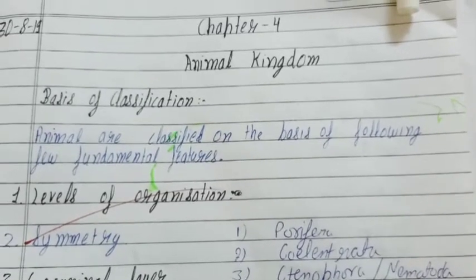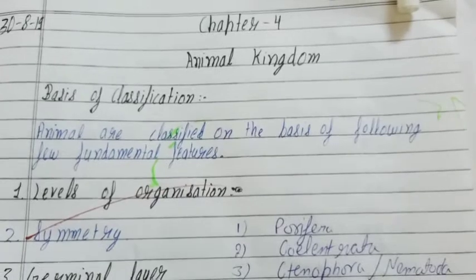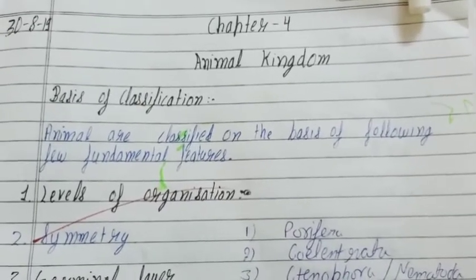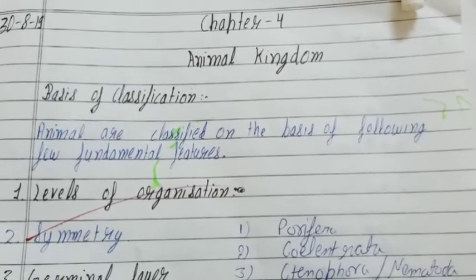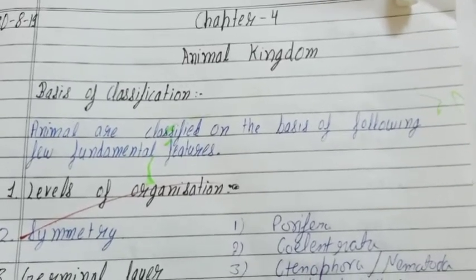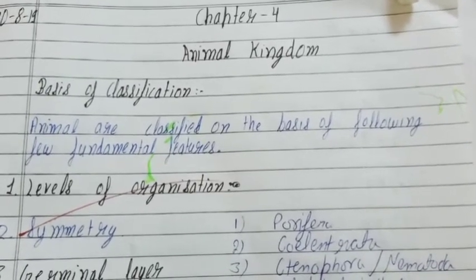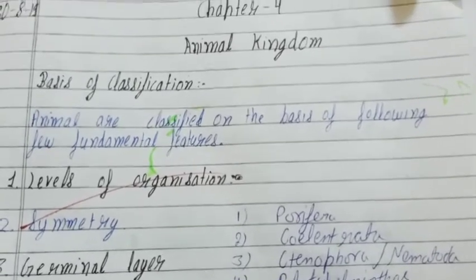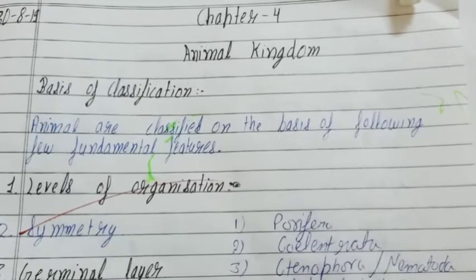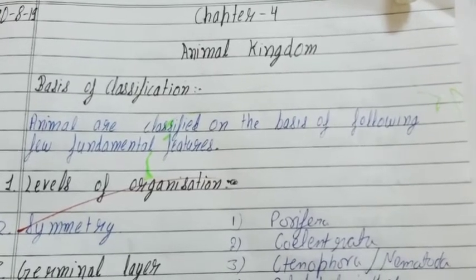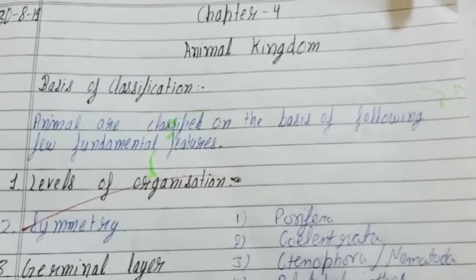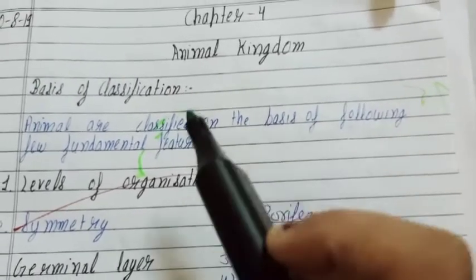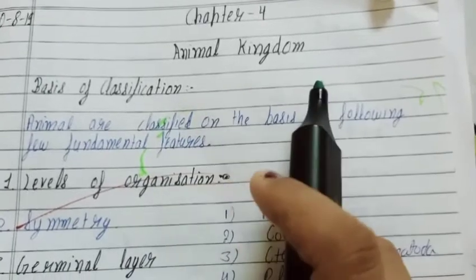Hello students, this is Chapter 4 of Biology: Animal Kingdom. Animal Kingdom is the next part of biological classification. We were discussing that living organisms are divided into five kingdoms: Monera, Protista, Fungi, Animalia, and Plantae. We have completed the Plant Kingdom. Now the topic is Animal Kingdom.